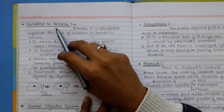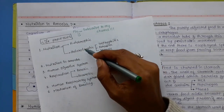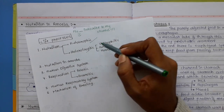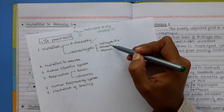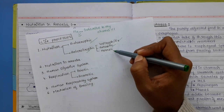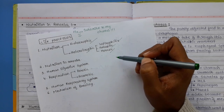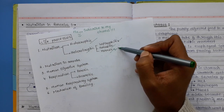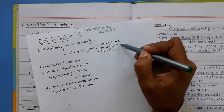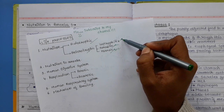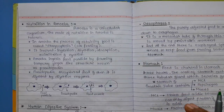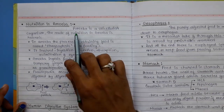Quick recap: autotrophic — makes its own food (green plants); heterotrophic — does not make its own food. Under heterotrophic: saprophytic — depends on dead and decaying matter (fungi and bacteria); parasitic — steals nutrients from a host (tapeworm, cuscuta); holozoic — eats parts or whole plants or animals (humans and most animals).